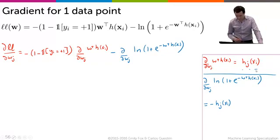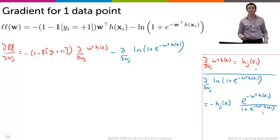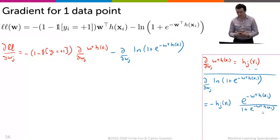Note that it's just like up here - there's an h_j of x_i that multiplies a really exciting, beautiful term: e to the power of minus w transpose h of x_i, divided by 1 plus e to the minus w transpose h of x_i. Please take a moment to enjoy the beauty of the logistic regression model.